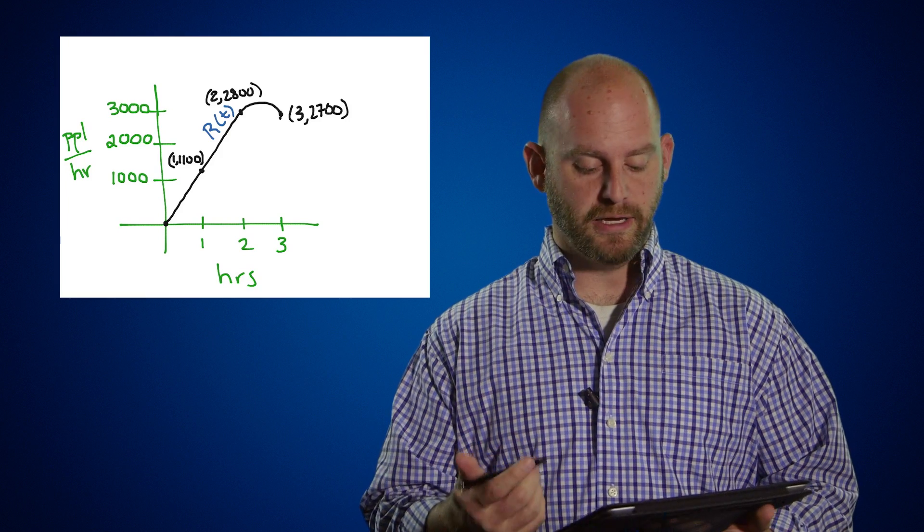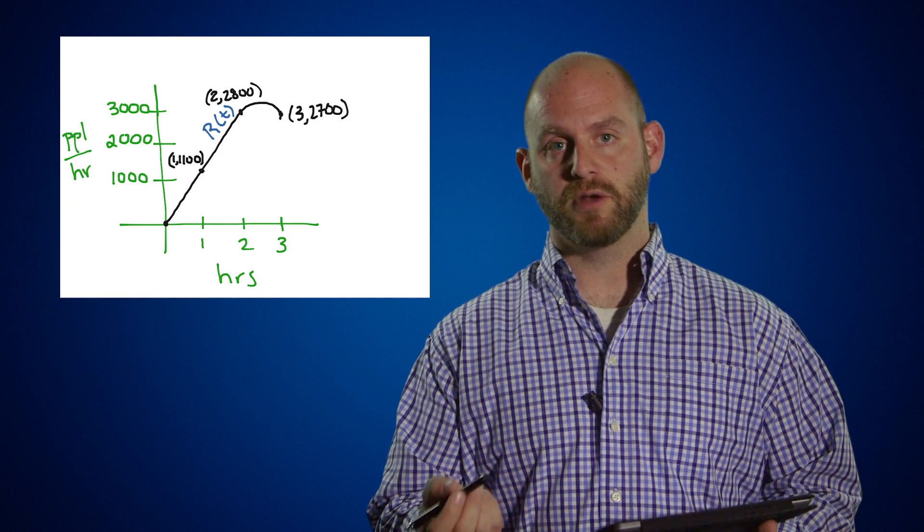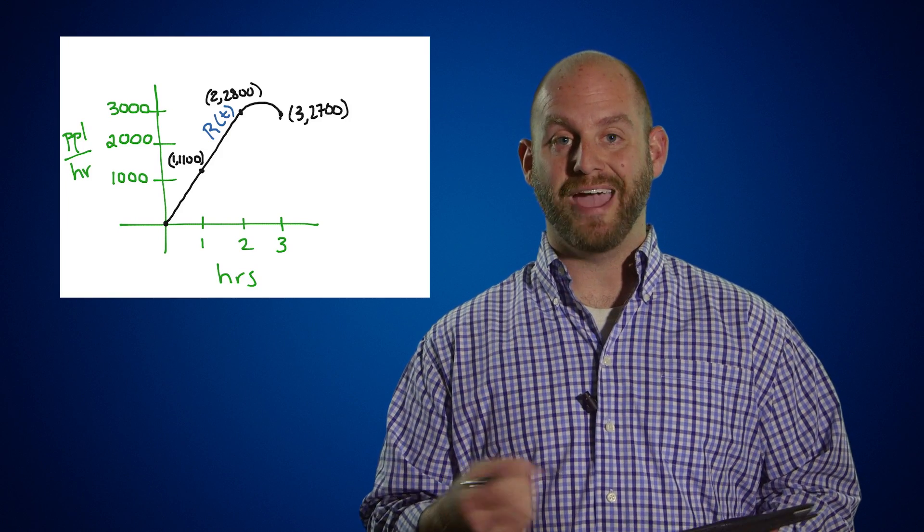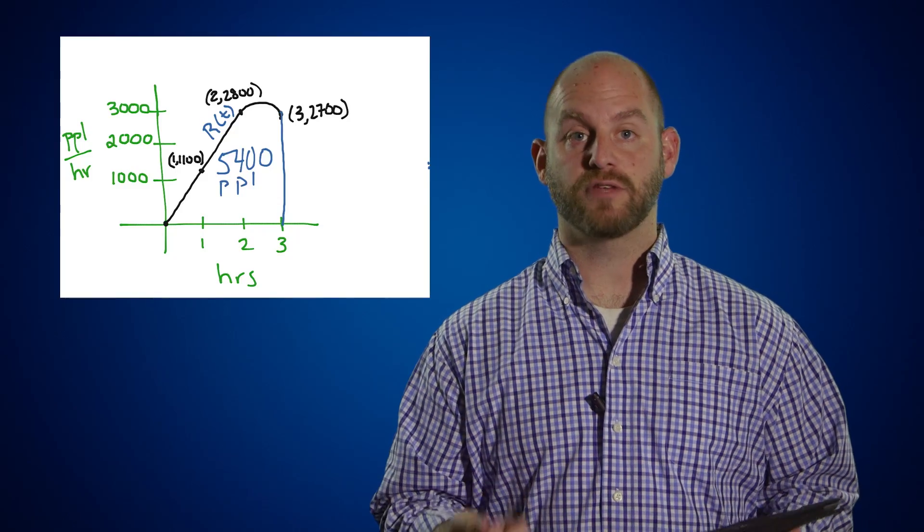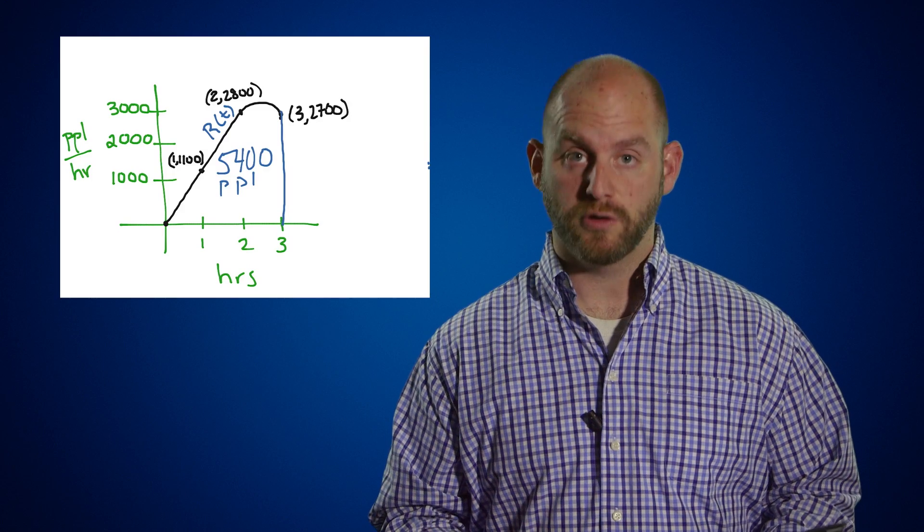Using Part Two of the Fundamental Theorem of Calculus, we found the area under this curve. If we enclose the figure between the curve, the x-axis, hour zero and hour three, we have an enclosed region. The 5,400 people is what our definite integral tells us — the area underneath this curve represents the 5,400 people that entered the auditorium.